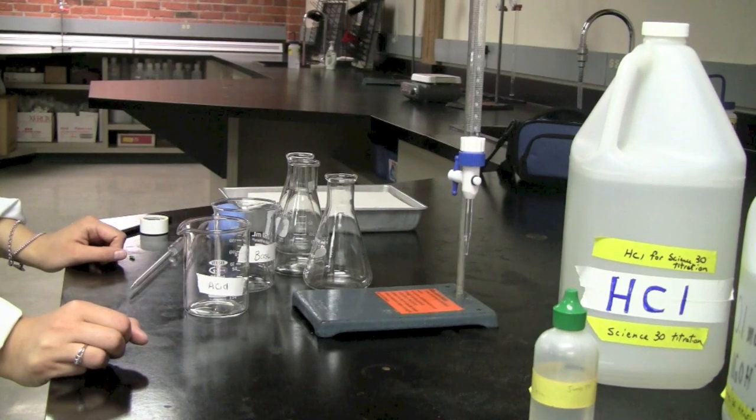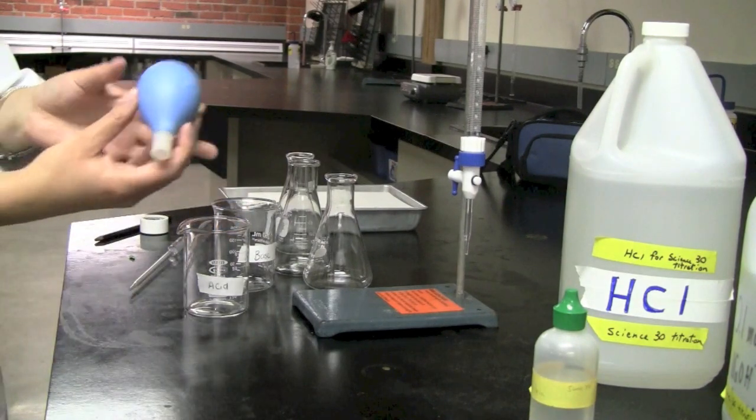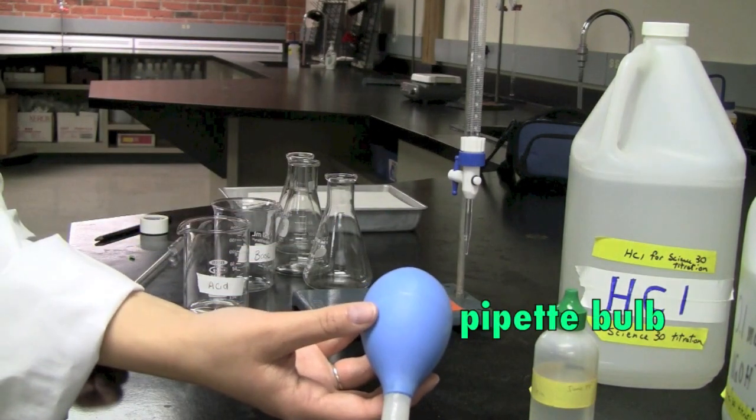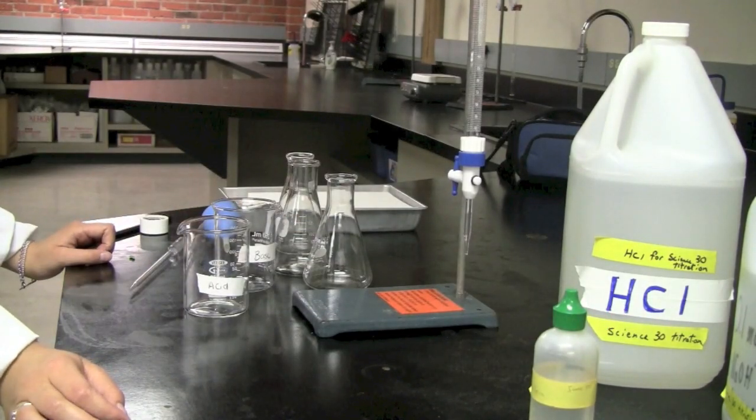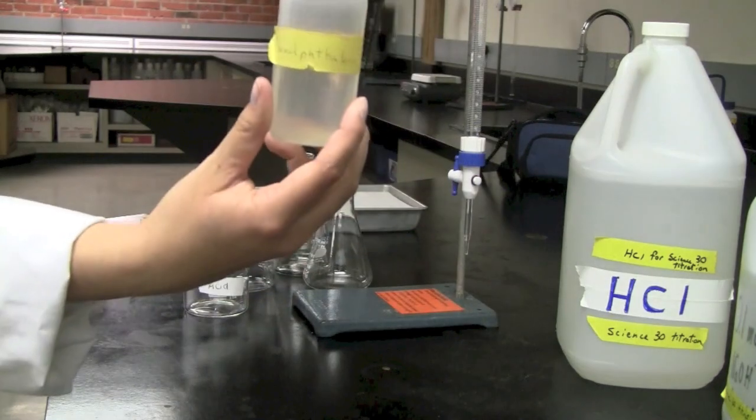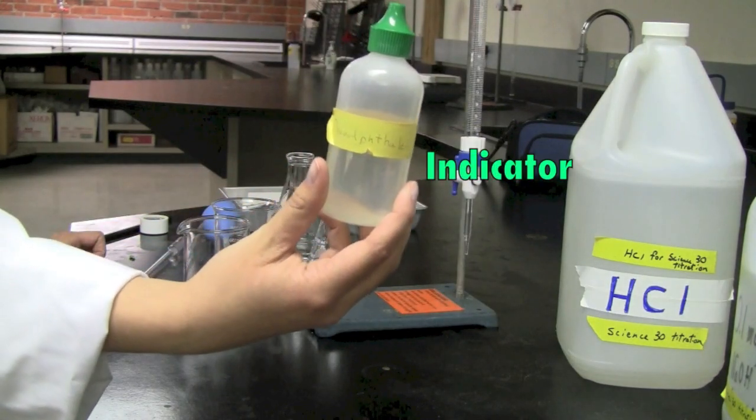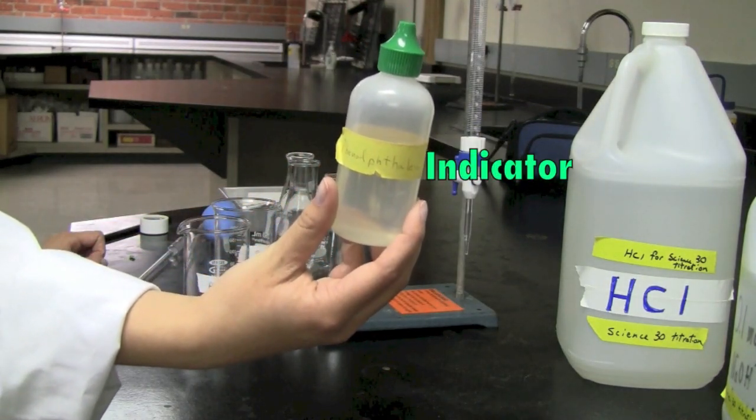And of course, we're going to need a pipette bulb to assist us with the work. As well, we're going to have something called phenolphthalein, which is an indicator that will give us a color change so that we can know if the base has been neutralized.